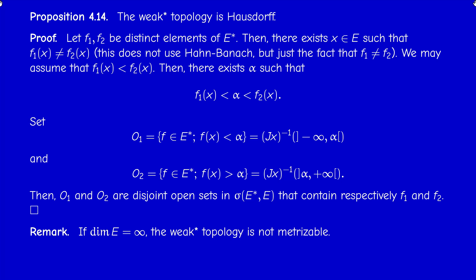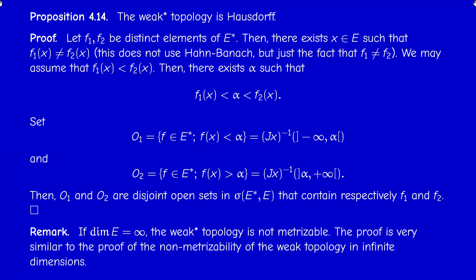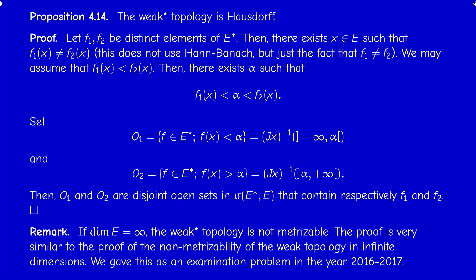As expected, if the dimension of E is infinite then the weak-star topology is not metrizable. We can prove this along the same lines as the proof that the weak topology is not metrizable in infinite dimensions — indeed, this was given as an examination problem some years ago.